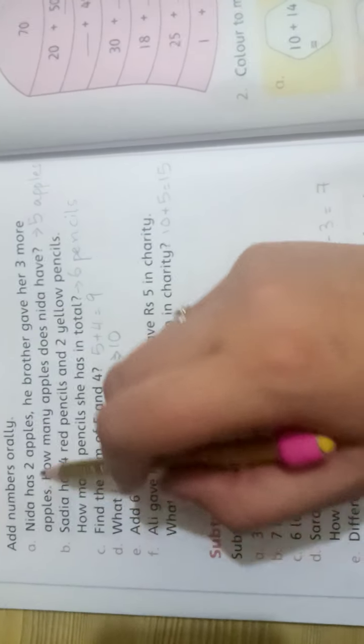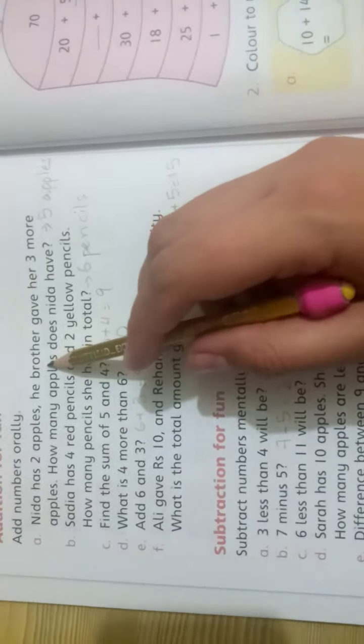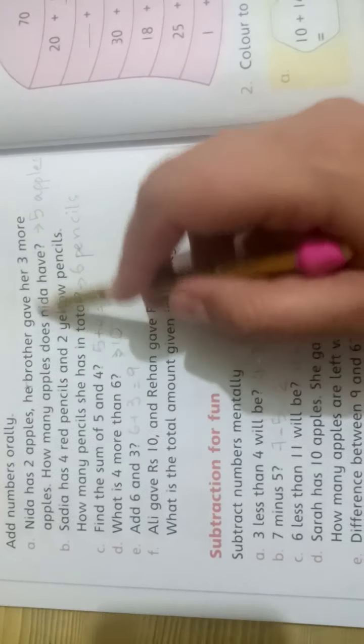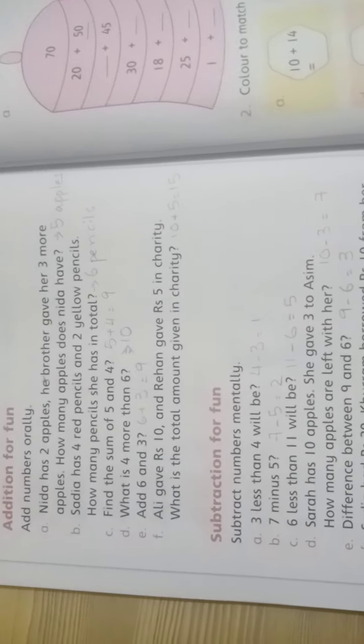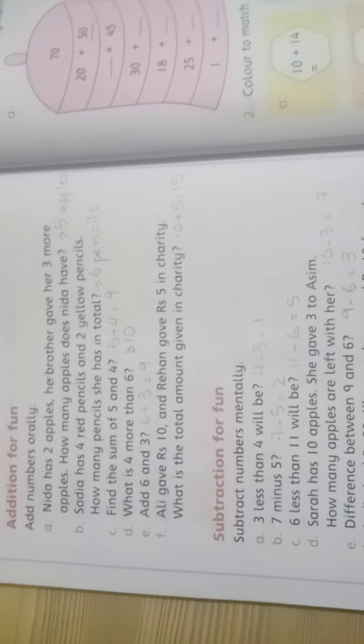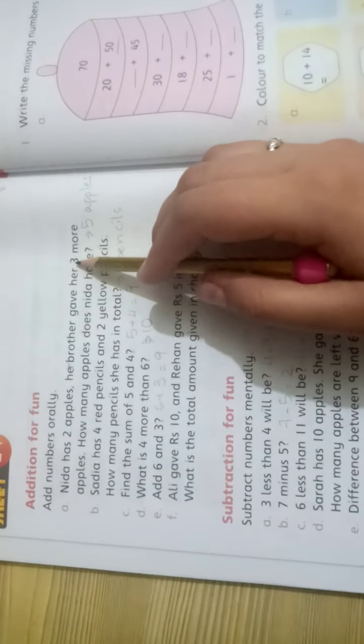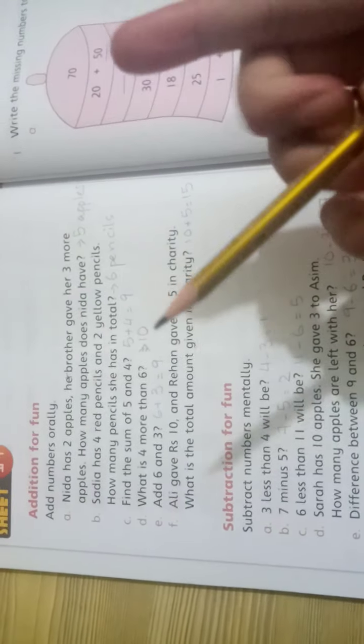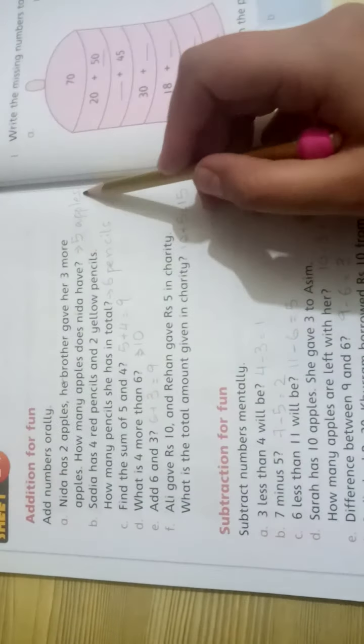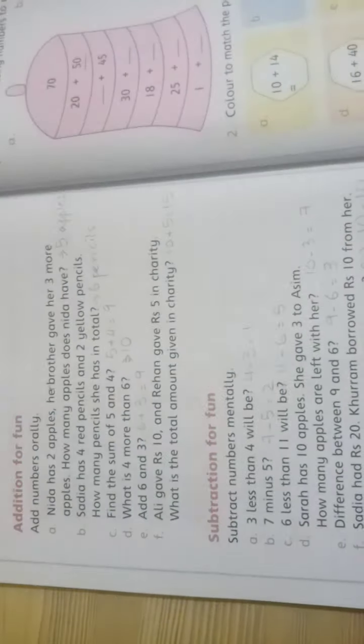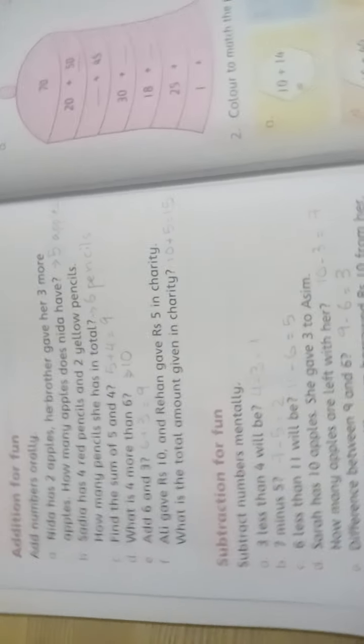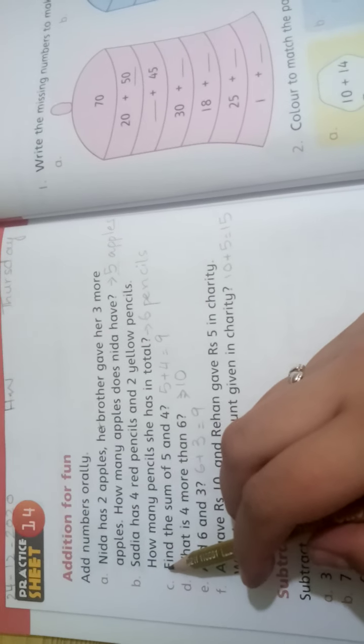Part A: Needa has 2 apples. Her brother gave 3 more apples. Needa had 2 apples and her brother gave her 3 more. How many apples does Needa have? Put 3 in 2: 3, 4, 5. So 5 apples she will have. Part B: Sadia has 4 red pencils and 2 yellow pencils. Total pencils? 4 plus 2 equals 6 pencils.